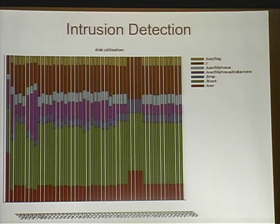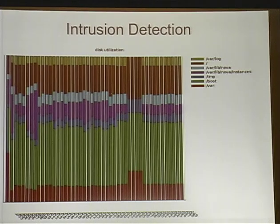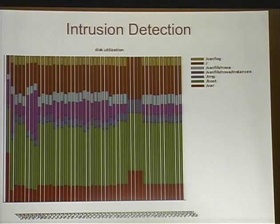You can also notice nodes that maybe shouldn't be there — in one instance, there were four nodes without /var/log. Those four nodes literally did not belong in that cluster: they had been racked, plugged in, and configured by the provisioning system, but weren't actually designed to operate in that cluster, so they were easy to isolate that way.